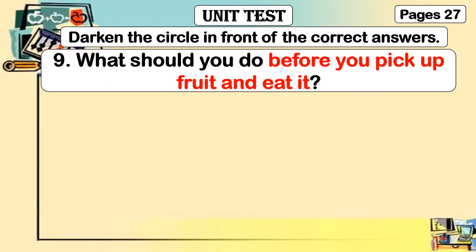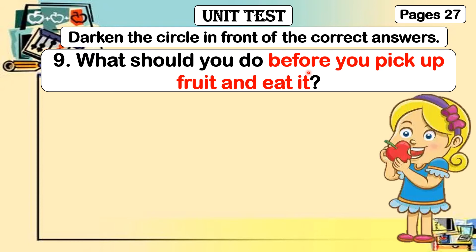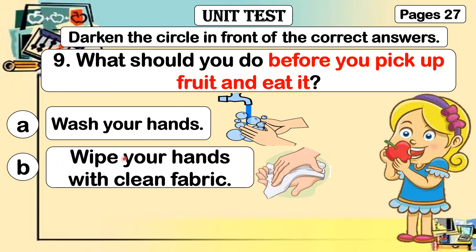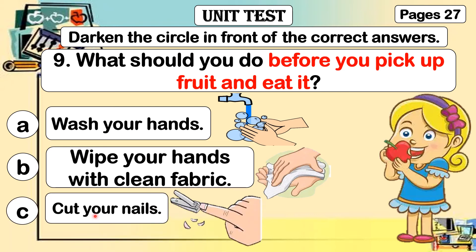Number nine: what should you do before you pick up fruit and eat it? Letter A: wash your hands. Letter B: wipe your hands with clean fabric. Or letter C: cut your nails.